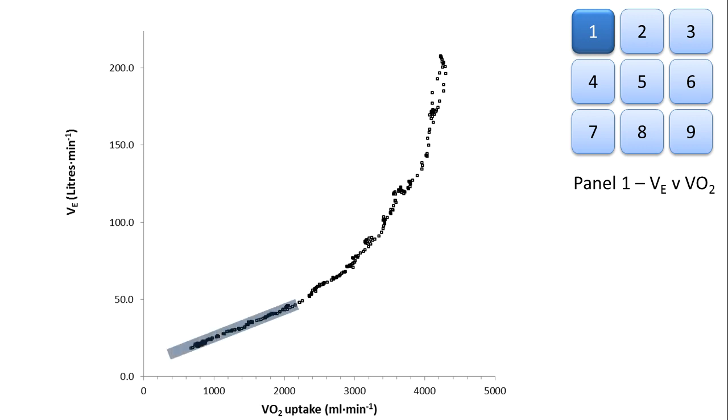In normal subjects, the initial increase in ventilation will be in direct proportion to the oxygen uptake until the subject reaches anaerobic threshold, or the first ventilatory threshold, VT1.